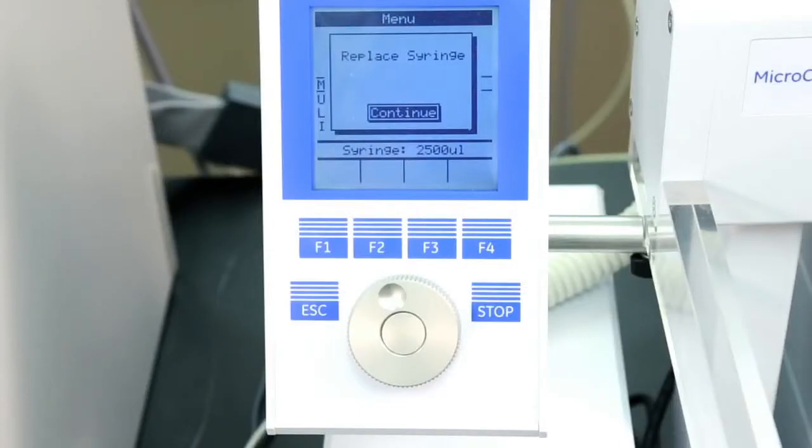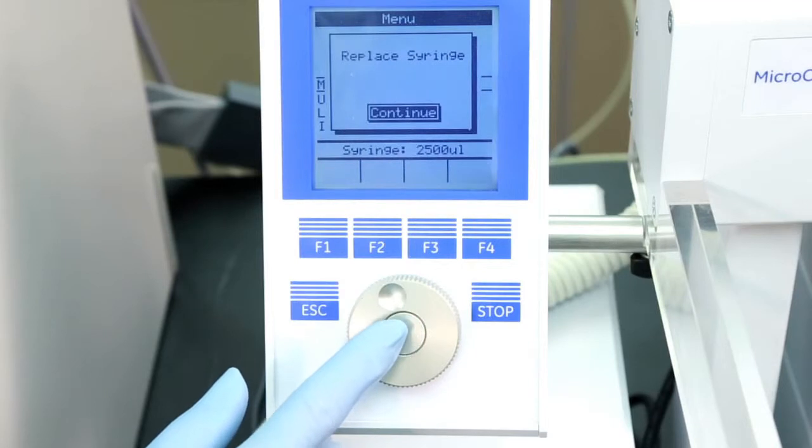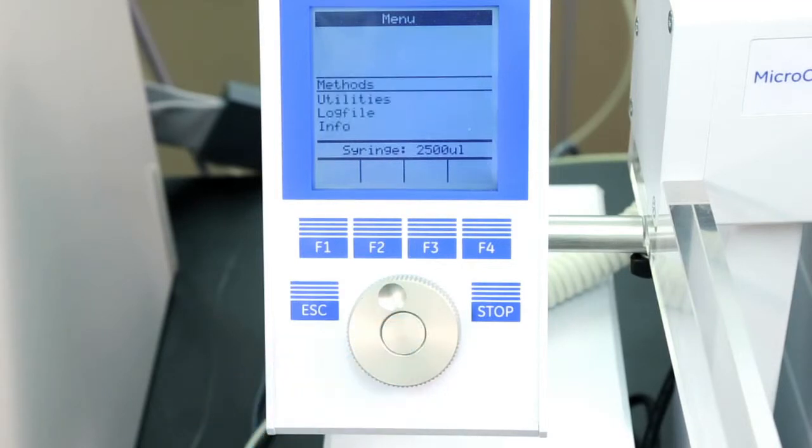After the syringe has been inserted, press the enter button on the console and then press the home button. The plunger will then move down until it hits the mechanical stop. This position is stored as the syringe's zero volume position, and then the injection unit returns to its home position.